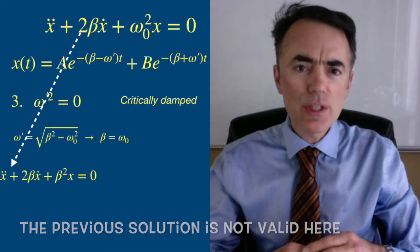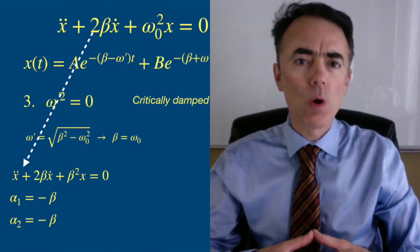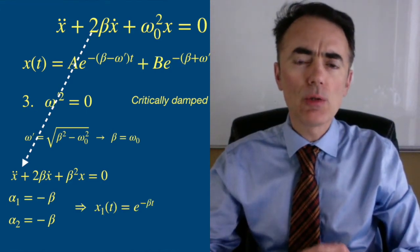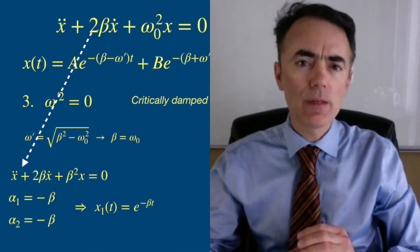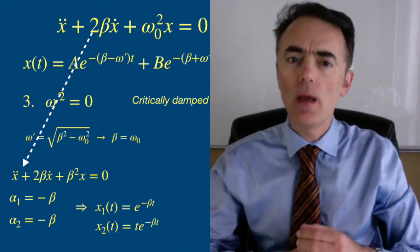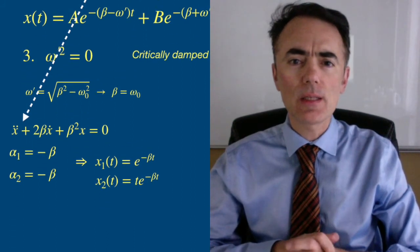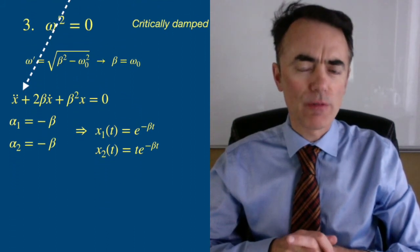In the procedure we followed to solve it, both solutions would be the same one. So the only solution would be e to the negative beta. Here the other solution to the second order differential equation is t times e to the negative beta. Let's quickly check that this is, in fact, a solution of the differential equation.